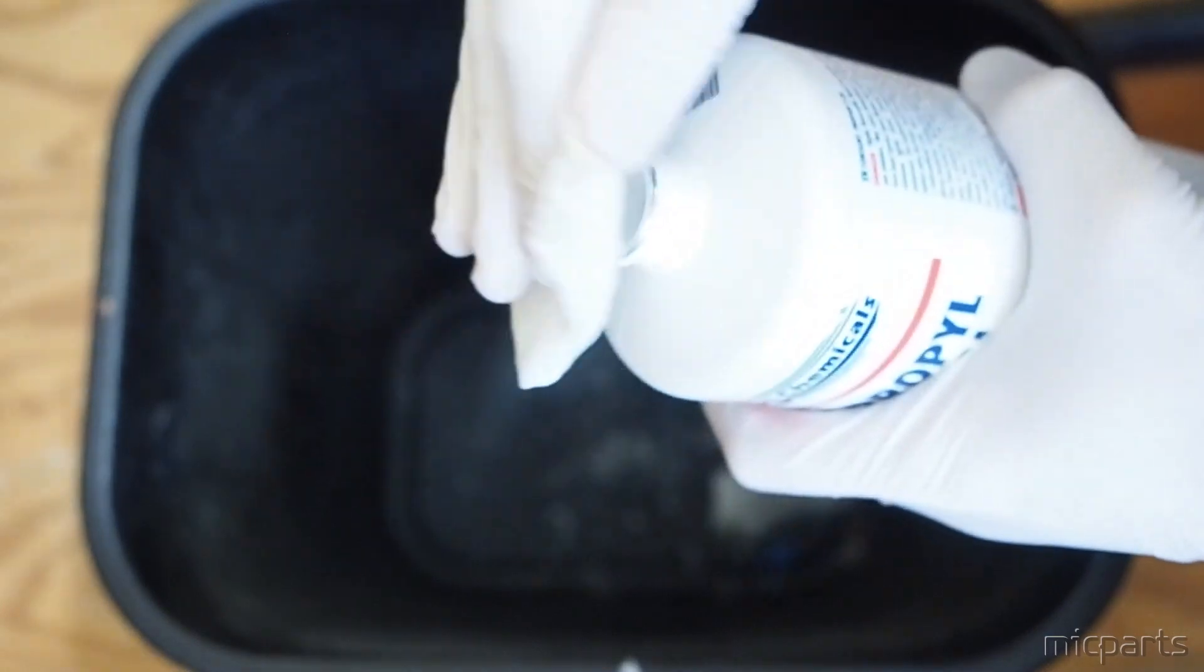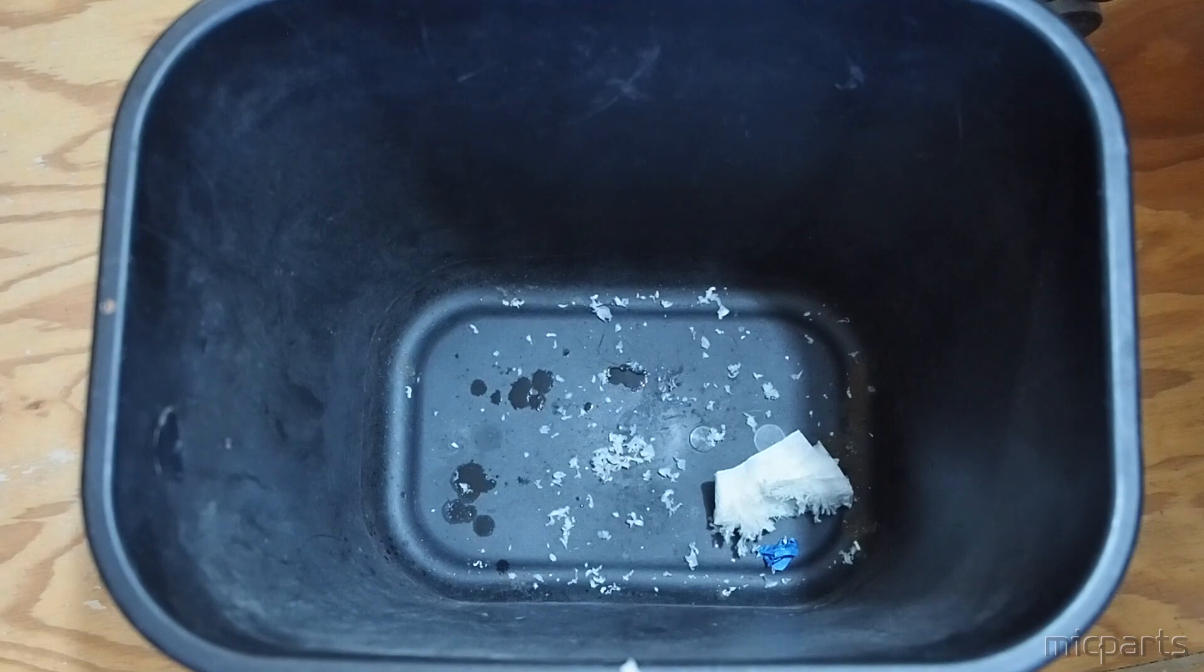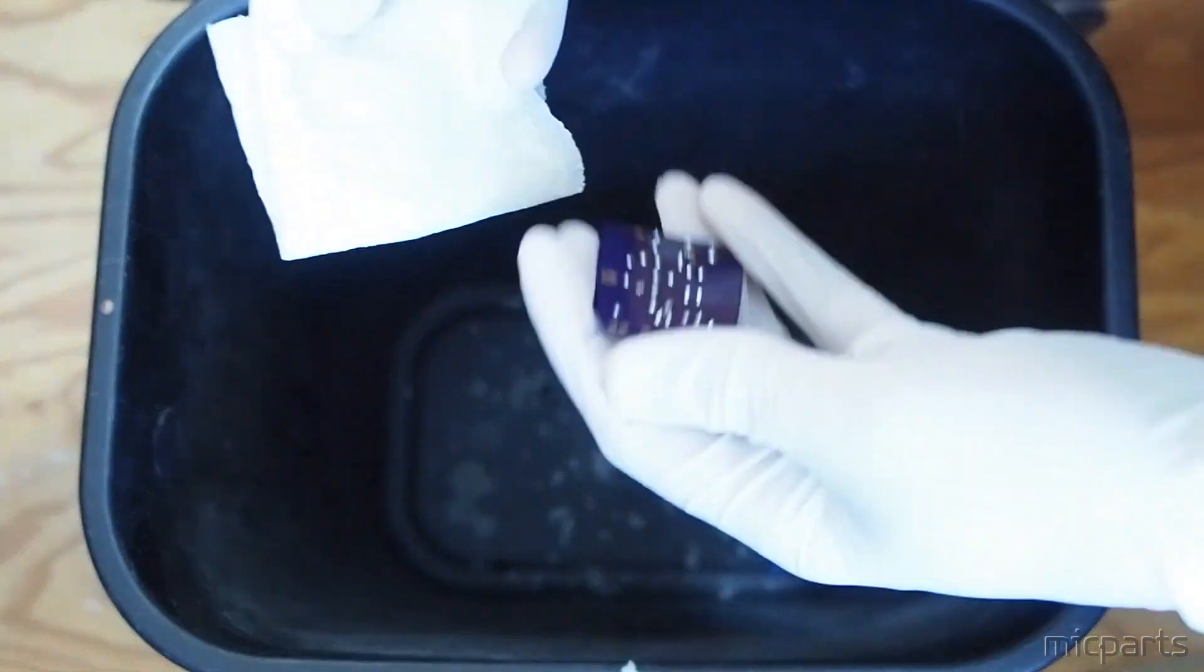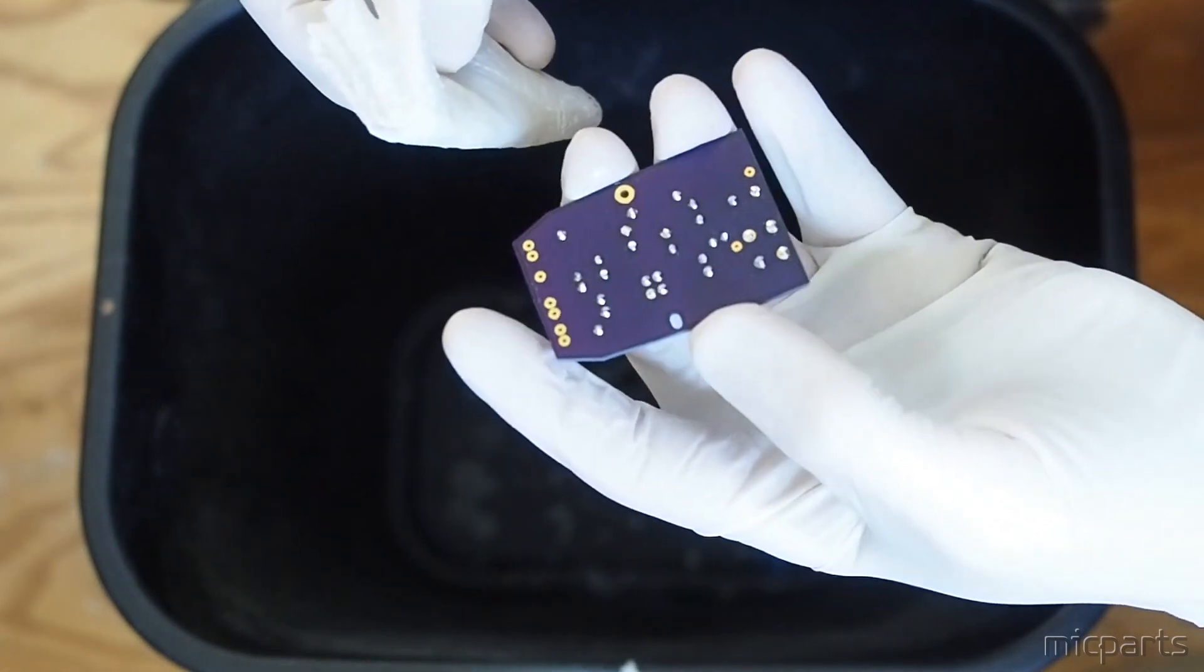So once that's done, we take a little brush and brush off any leftover paper towel. And then you saw a little inspection there with a magnifying glass where we look and see if we've actually gotten the board clean.